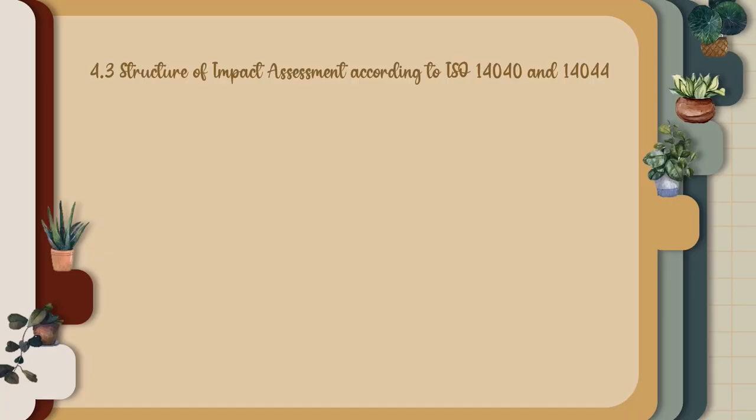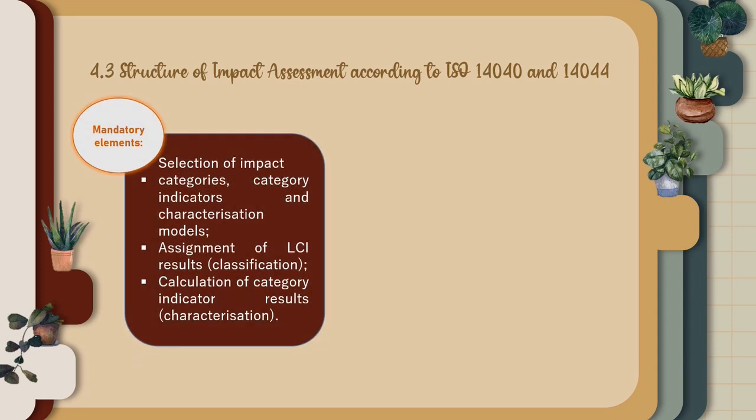Structure of Impact Assessment according to ISO 14,040 and 14,044. First, mandatory elements: Selection of impact categories, category indicators, and characterization models. Assignment of LCI results — classification. Calculation of category indicator results — characterization.